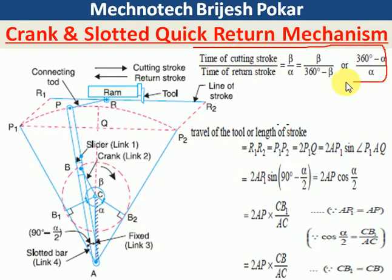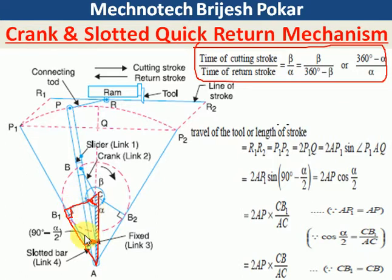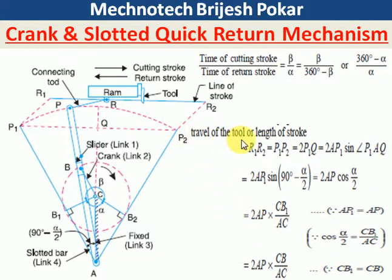Looking at triangle CB1A, this angle is alpha/2. The other angle is 90 minus alpha/2, because the total angle in the triangle is 180°, with one angle being 90°, one being alpha/2, and the remaining being 90 minus alpha/2.